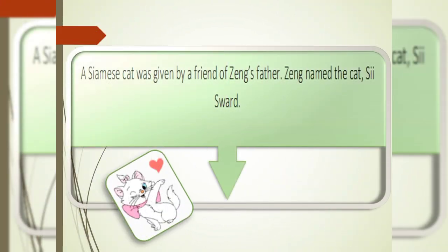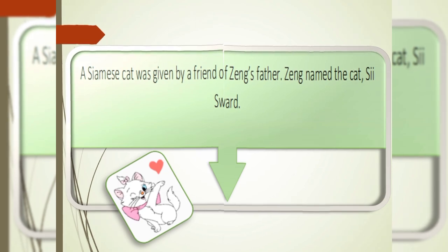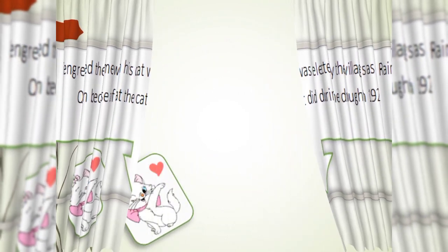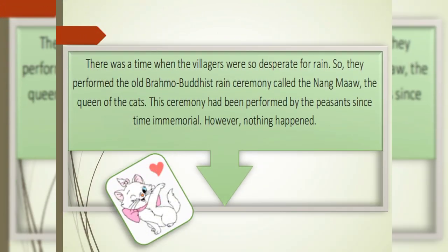Zhang recalled the time when his cat was elected by the villagers as the Rain Queen because of what the cat did during the drought in 1925. There was a time when the villagers were so desperate for rain. So, they performed the old Brahmo Buddhist rain ceremony called the Nang Mao, The Queen of Cats. The ceremony had been performed by the peasants since time immemorial. However, nothing happened.